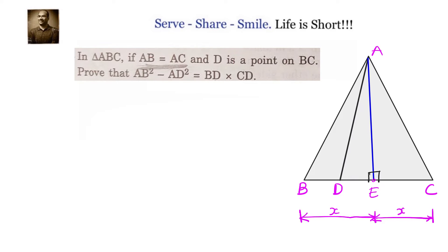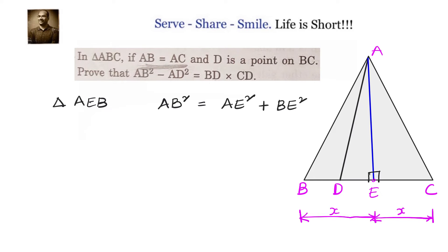We see two right triangles. The first right triangle has AB as the hypotenuse — that is triangle AEB. By Pythagoras theorem: AB squared equals AE squared plus BE squared. The next is AD squared, which comes from right triangle ADE: AD squared equals AE squared plus ED squared.